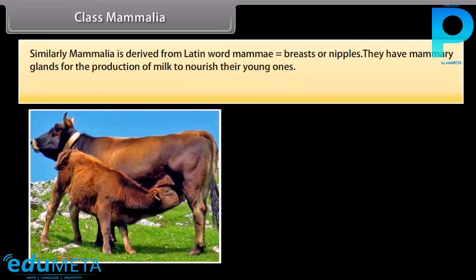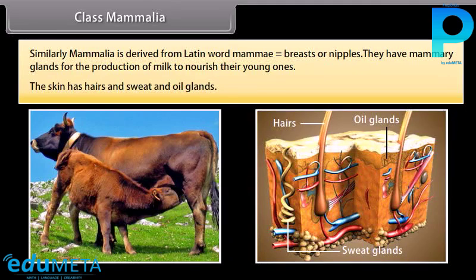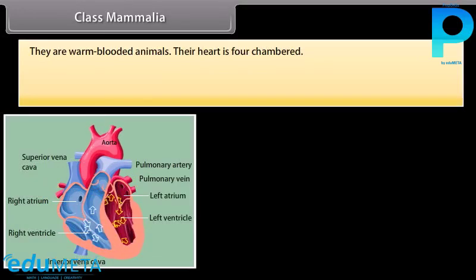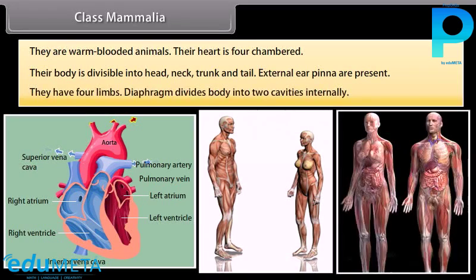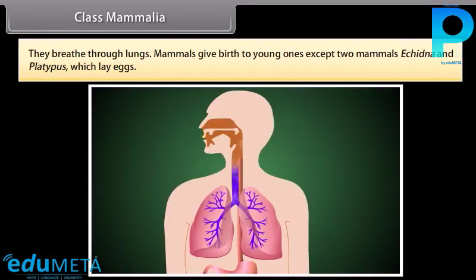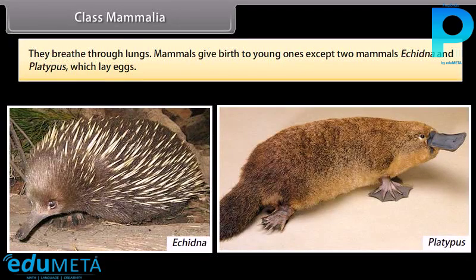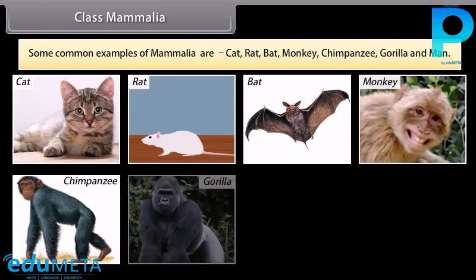Class Mammalia: derived from Latin word mamma, meaning breasts or nipples. They have mammary glands for the production of milk to nourish their young ones. Their skin has hairs and sweat and oil glands. They are warm-blooded with a four-chambered heart. Their body is divisible into head, neck, trunk, and tail. External ear pinnae are present. They have four limbs; a diaphragm divides the body into two cavities internally. They breathe through lungs. Mammals give birth to young ones, except Echidna and Platypus which lay eggs. Common examples are cat, rat, bat, monkey, chimpanzee, gorilla, and man.